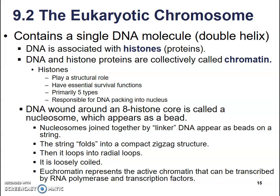They allow it to compact very tightly so that it doesn't become tangled, so that it can replicate when it needs to and be copied into RNA so that proteins can be made. DNA is wound around an eight-histone core and is called a nucleosome, which appears as a bead.